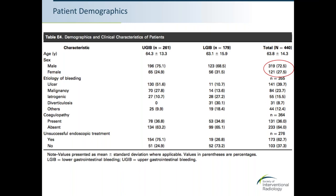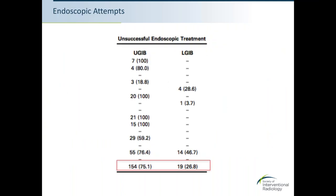Of the 440 patients, 261 had upper GI bleeds and 179 had lower GI bleeds (about 40%). The most commonly identified cause of upper GI bleeding was ulcer (just over half), while for lower GI bleeding it was diverticulosis at 30%. About 35% of patients in both groups were identified as having coagulopathy, which will be relevant in the conclusions. Notably, 75% of upper GI bleed patients had failed prior endoscopic treatment, compared to only 26% in the lower GI bleed group.